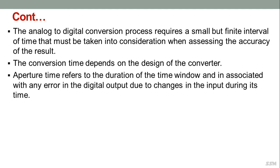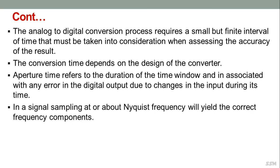Due to continuous changes in analog signals, uncertainty about when in a sample time window the conversion occurs causes corresponding uncertainty in the digital value. This is of significant importance if there is no sample and hold amplifier on the ADC input. The term aperture time refers to the duration of the time window, associated with error in the digital output due to input changes during that time. To obtain accurate time-amplitude resolution, we must have an ADC with adequately small aperture time.